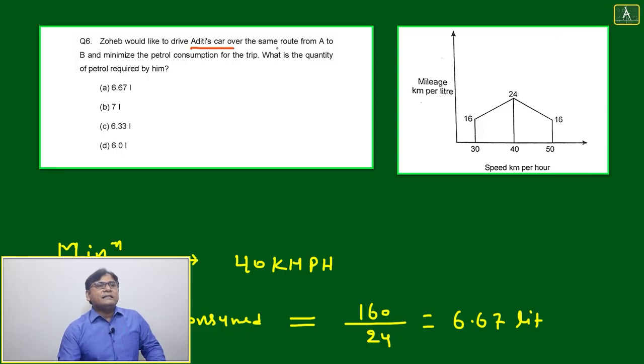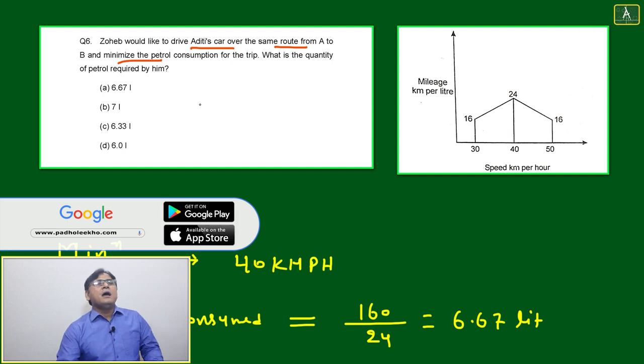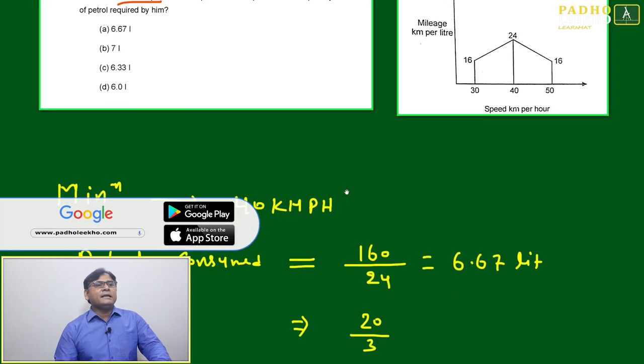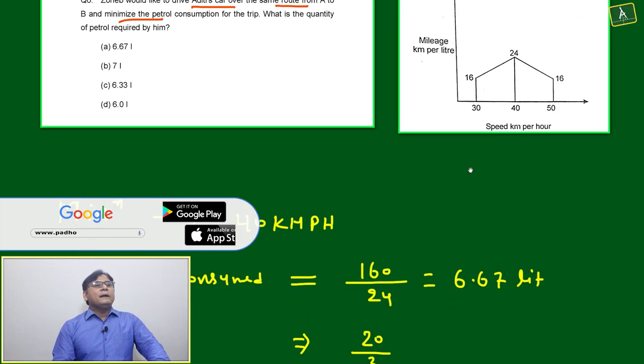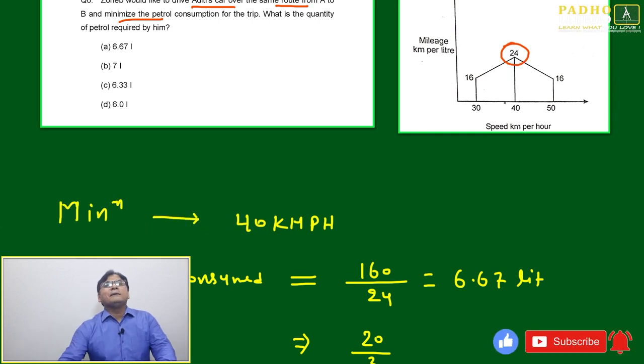Johef would like to drive Aditi's car over the same route, meaning the same distance is covered from A to B, and minimize the petrol consumption for the trip. How to minimize the petrol consumption? What is the quantity of petrol required by him? This is a simple thing because of the mileage we are getting.